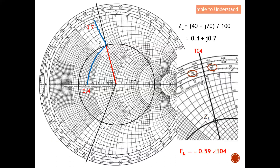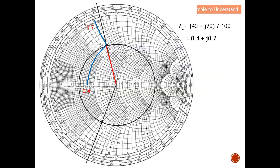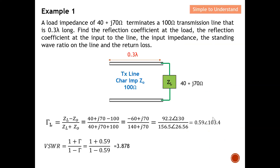Now I will show how to obtain the angle of the reflection coefficient from the Smith chart. Zooming into the angle scale, the Z_L position falls between 100° and 110° — closer to about 104°. So the reflection coefficient at the load reads as 0.59∠104° on the Smith chart, which is very similar to the calculated value of 0.59∠103.4°. Either by calculation or by Smith chart, the results are highly correlated.